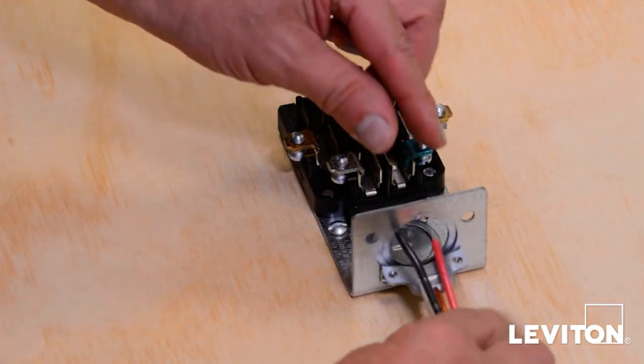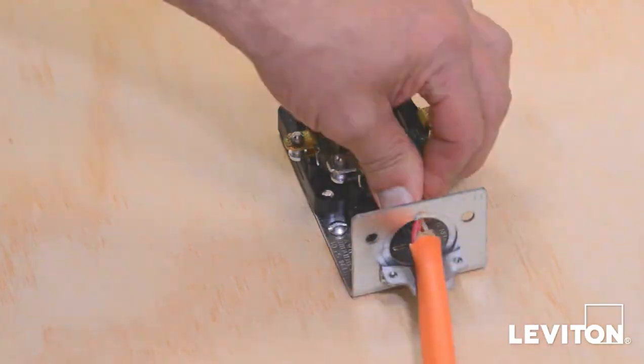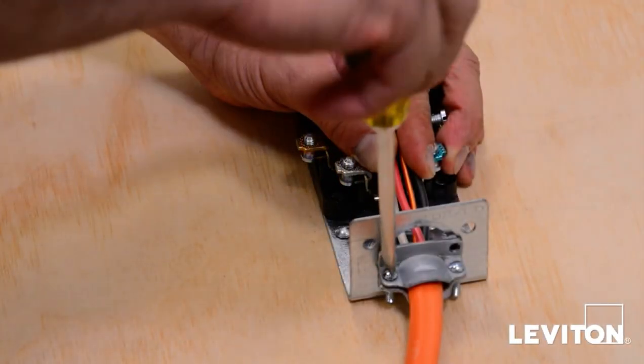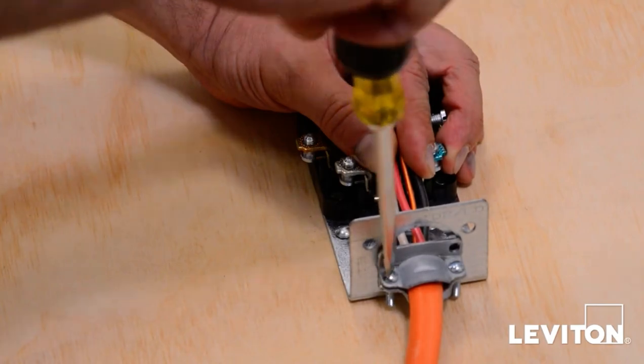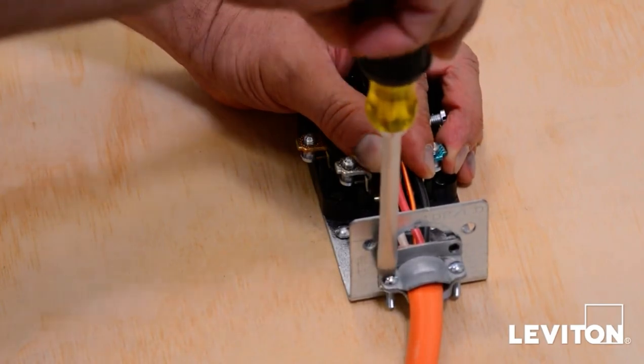Next, feed conductors through knockout hole. Fit loose half of strain relief clamp around conductors and secure to fixed half of clamp using long machine screws provided.